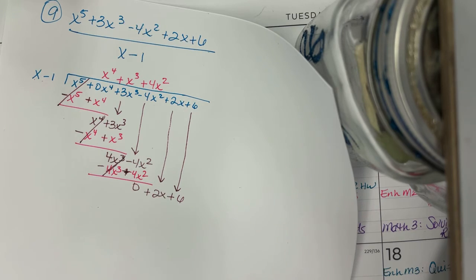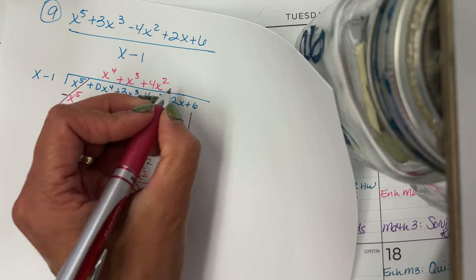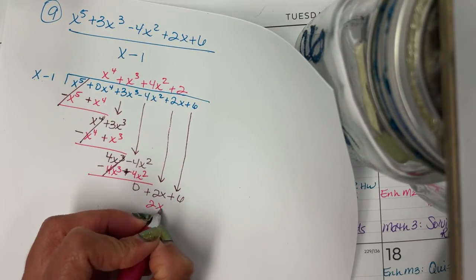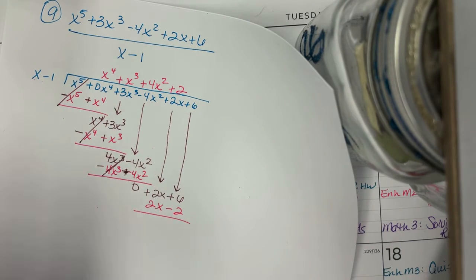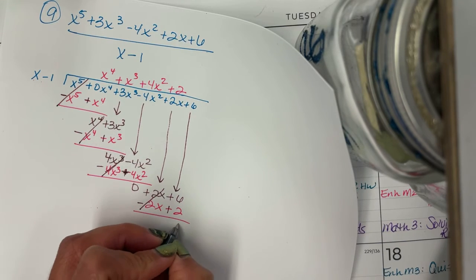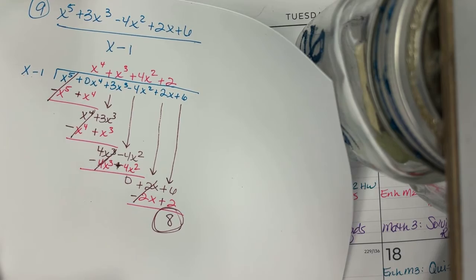And now I need to get 2x. So what do I multiply by x to get 2x? Well, I just need a positive 2. 2 times x is 2x. 2 times negative 1 is negative 2. Do the sign change. Boom shakalaka. Those cancel out. 6 plus 2 is 8. There's my remainder of 8, the same remainder I got using synthetic division today.